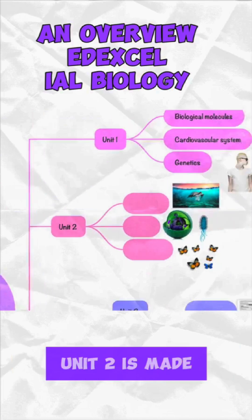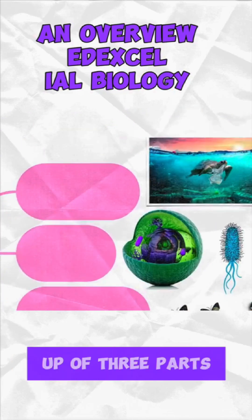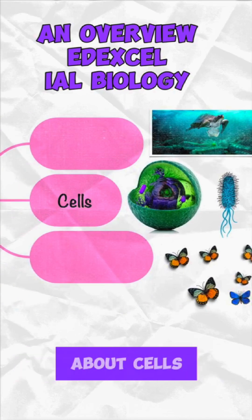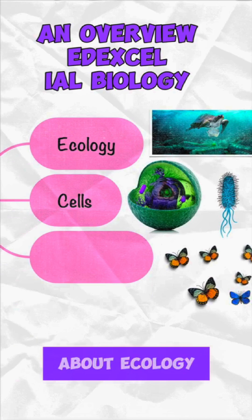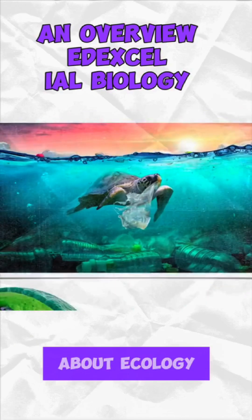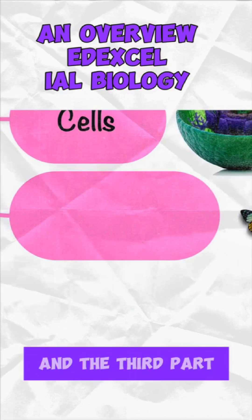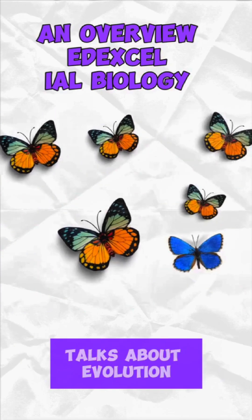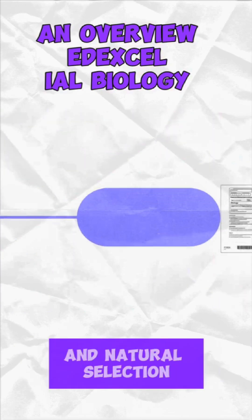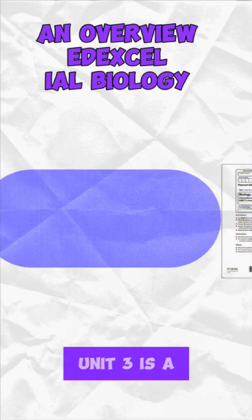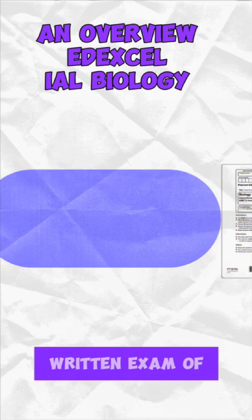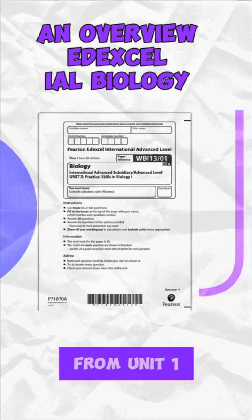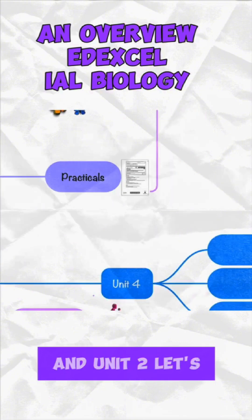Unit 2 is made up of three parts. The first part talks about cells, the second part talks about ecology, and the third part talks about evolution and natural selection. Unit 3 is a written exam of all the practicals taken from Unit 1 and Unit 2.